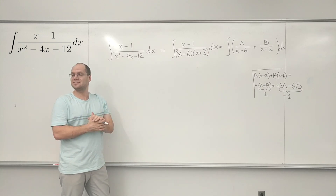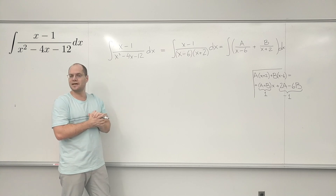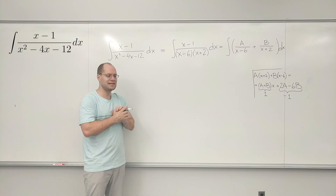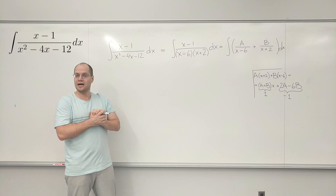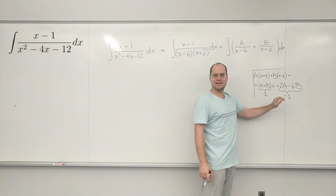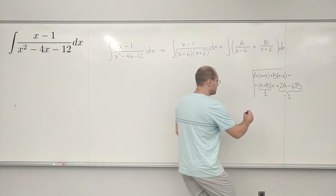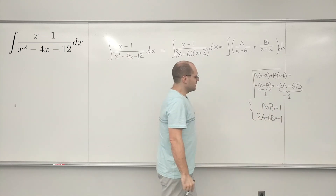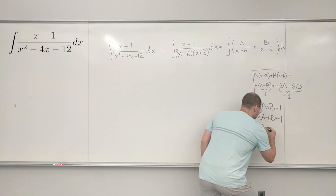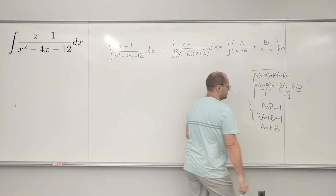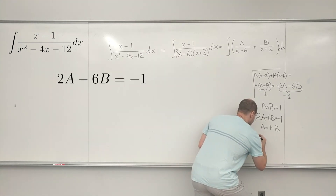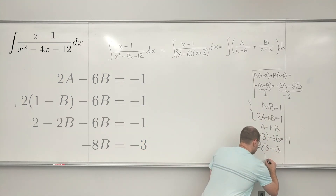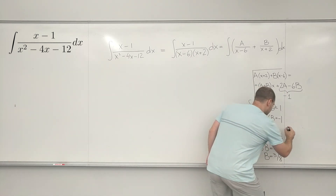So now we have to solve this system of equations — whichever way you can. You know how to solve systems by substitution; later in linear algebra you'll learn Gaussian elimination, or you can try to guess. Let's write out the system: A plus B equals 1, so A equals 1 minus B. Plugging in, we find B equals 3/8, which means A is determined.